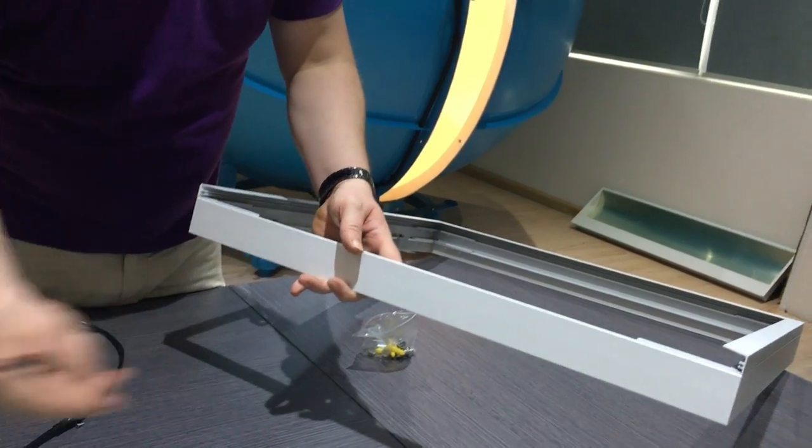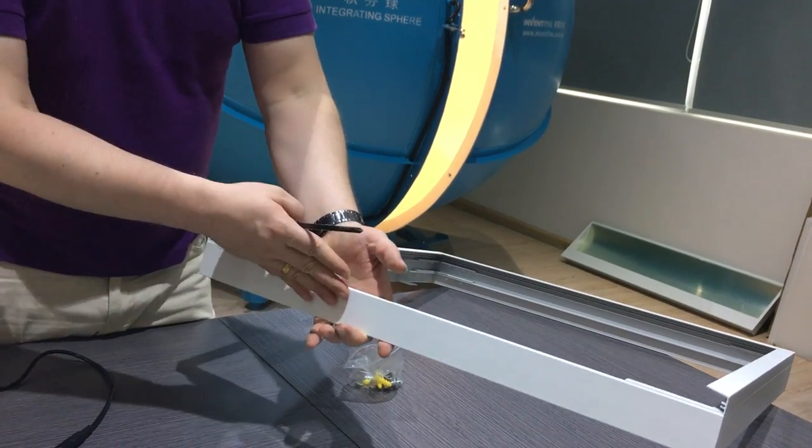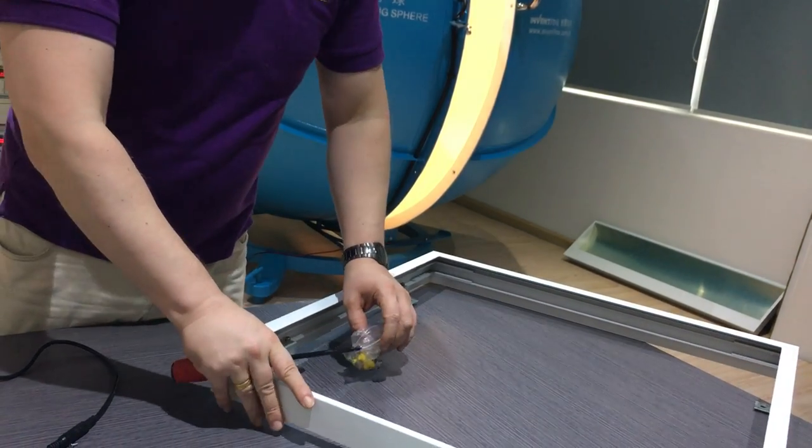I take the trim off. I slide the panel in. I pop the driver behind and then put my trim back on and now my panel is surface fixed.